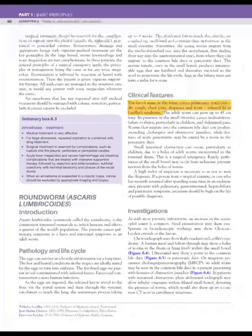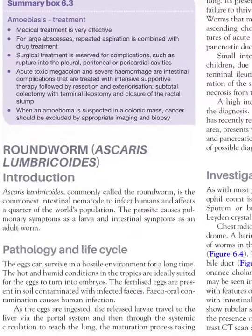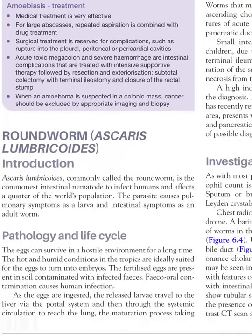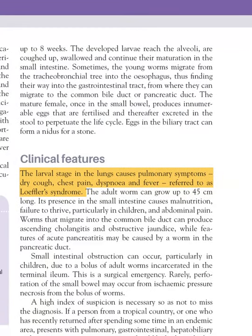Next we move on to roundworm, caused by Ascaris lumbricoides, also transmitted via the fecal-oral route. When eggs are ingested, larvae travel throughout the body in a complex life cycle: from the intestine to the circulation, then to the lungs, and from the lungs via the alveoli to the systemic route.